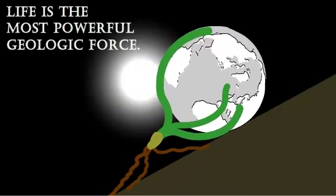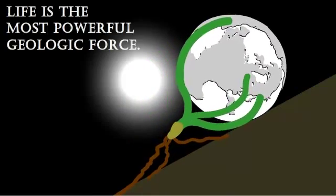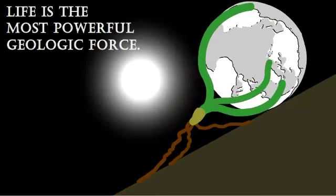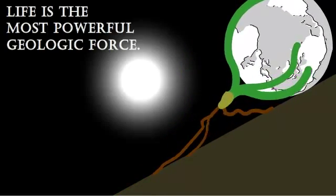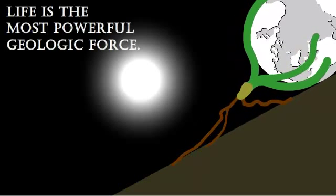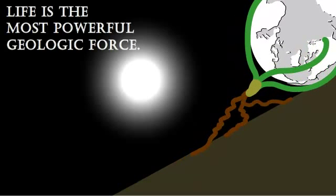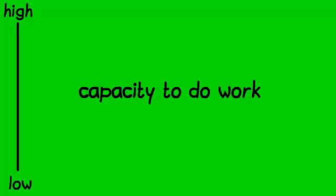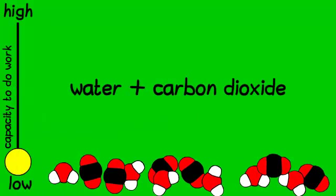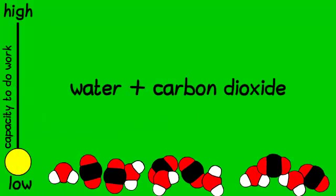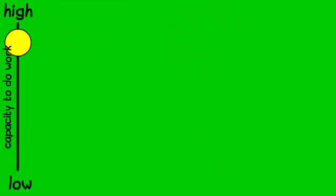Each year, the biosphere does about nine times the work, meaning force over distance, as all our industrial energy combined. But we tend not to notice it as work, because this work is quiet, spread out and slow. This work is also invisible to the naked eye, because it is chemical work, breaking apart chemical bonds between atoms.